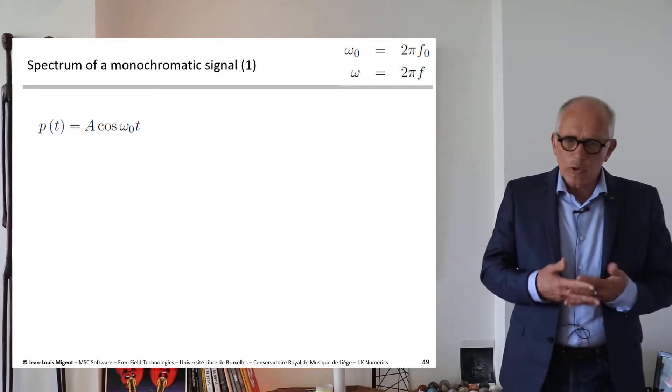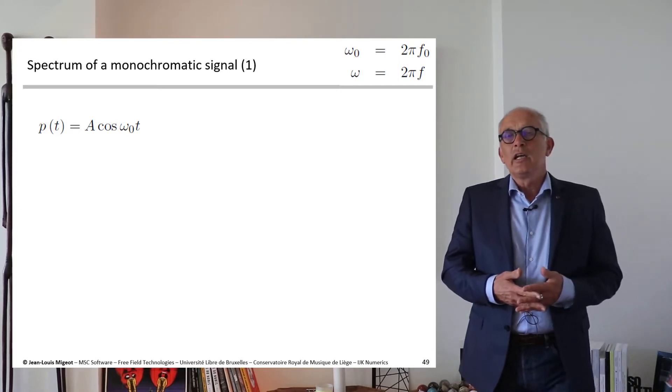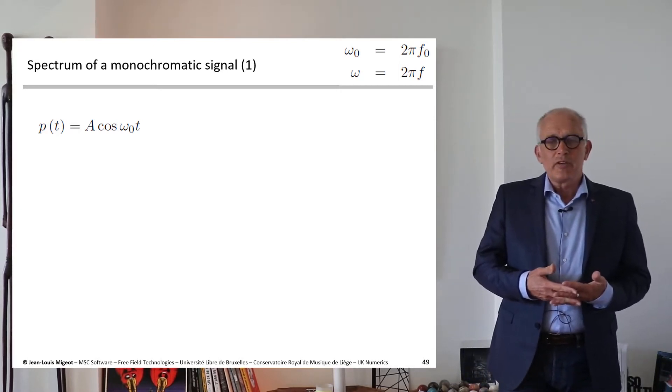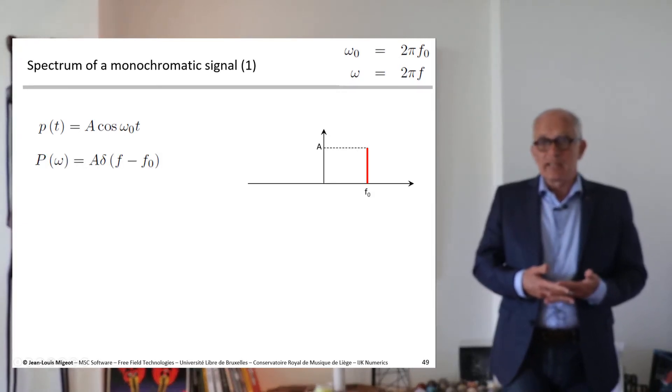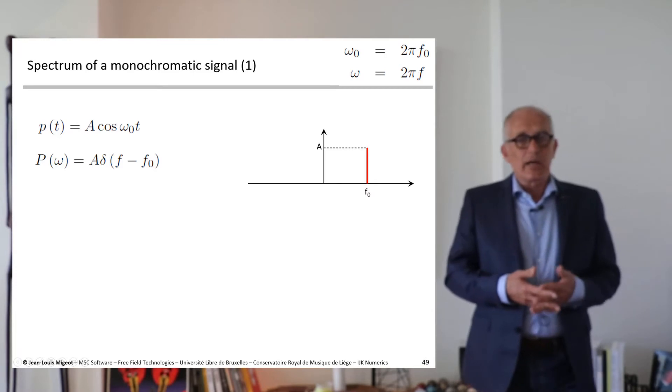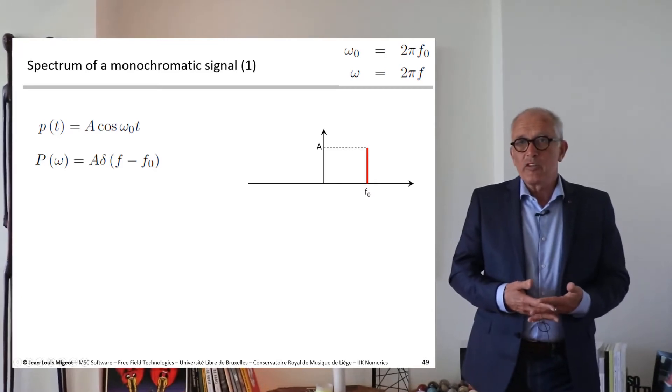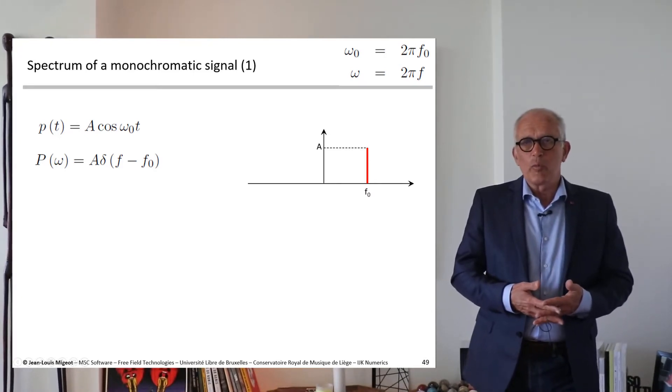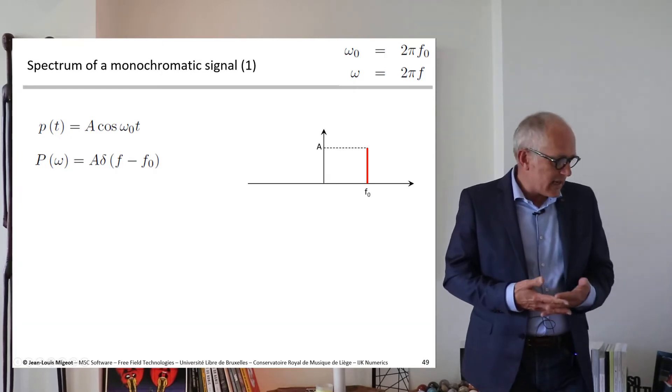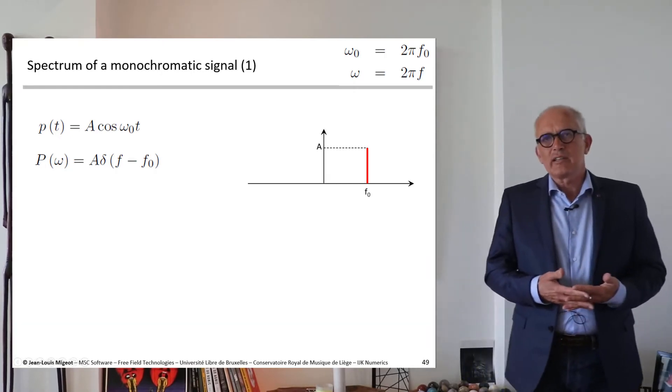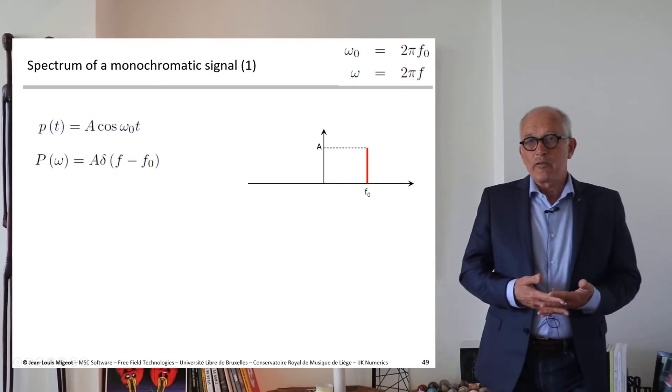If I ask you to tell me what the spectrum is, it is quite likely that you will come up with something like that. There is just one frequency line at the frequency f0 corresponding to omega zero, so the spectrum can be expressed as A times the Dirac delta function f minus f0.